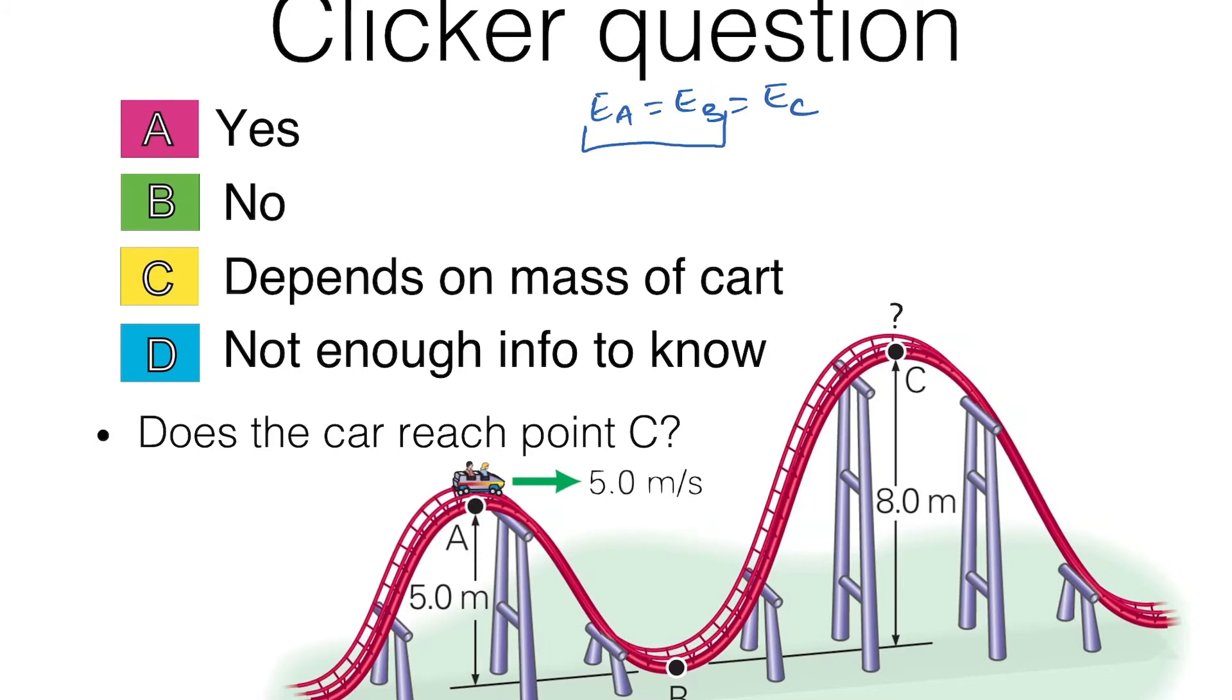So let's calculate the energy at B and energy at C. The minimum energy required to be at C is, let's say it gets to point C and it stops. That means there's no velocity at point C.